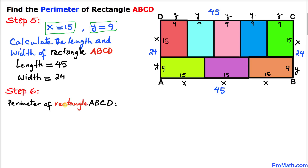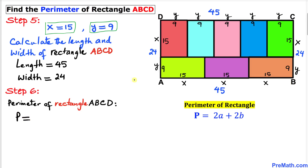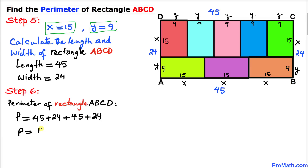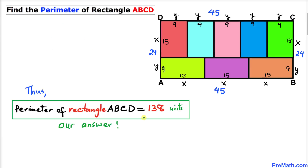Now let's calculate the perimeter of rectangle ABCD. The perimeter equals the sum of all sides: 45 plus 24 plus 45 plus 24, which gives us 138 units. Therefore, the perimeter of rectangle ABCD is 138 units. Thanks for watching, and please don't forget to subscribe to my channel for more exciting videos. Bye!